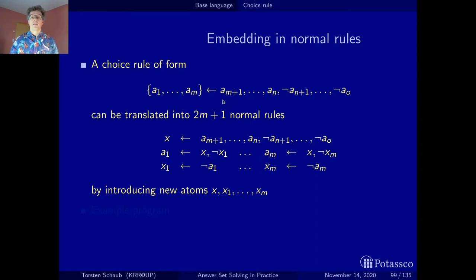We look at a rule with a normal body and a special head. This has m atoms. We will map the whole rule onto 2m + 1 normal rules. The first thing we do is introduce an auxiliary atom x that tells us when the body of the original rule is true. This is the same body as we had before. Then for each atom from a1 to am, we introduce a pair of rules. This here is the pair for a1, and this here is the pair for am.